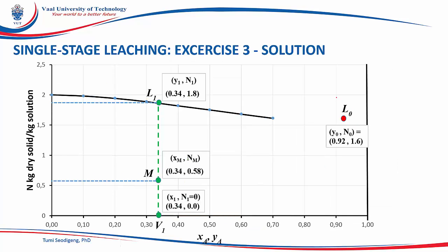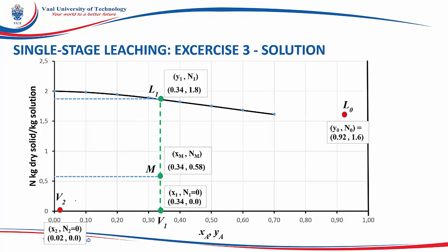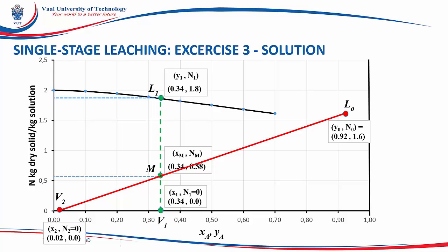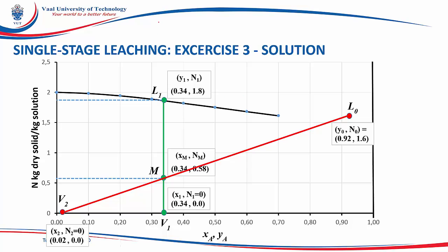Step 3 is to position point L0 at coordinates Y0 = 0.92 and N0 = 1.6, and then position solvent feed V2 at its calculated coordinates. We draw the line joining L0 and V2, since those two combine to form mixture M, so M must lie along this line. Then we draw the line joining V1 to L1, because mixture M separates to form L1 and V1.